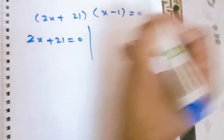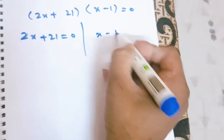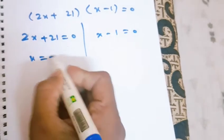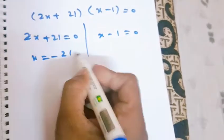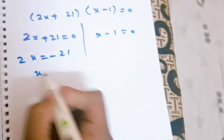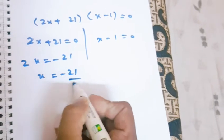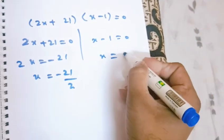We can put both of these equal to zero. Here, 2x will be equal to minus 21, and 2 will divide. So minus 21 divided by 2. Here, x minus 1 equals zero, so x will equal positive 1.